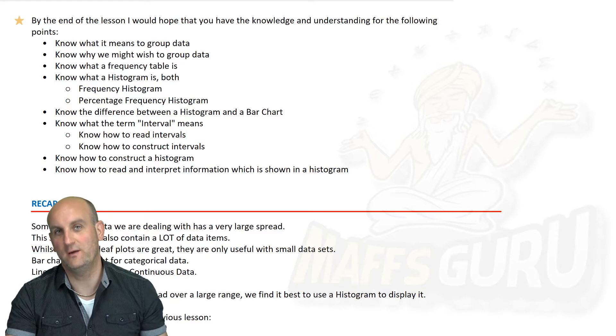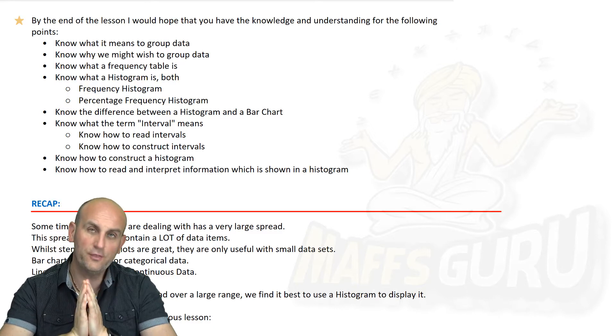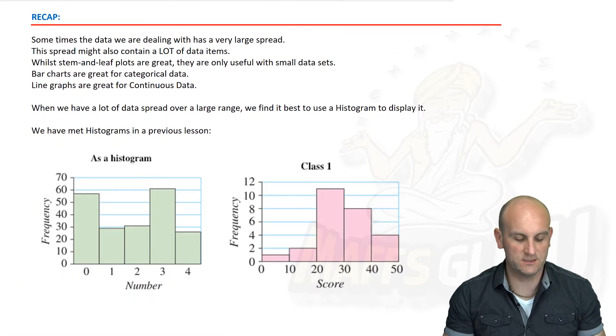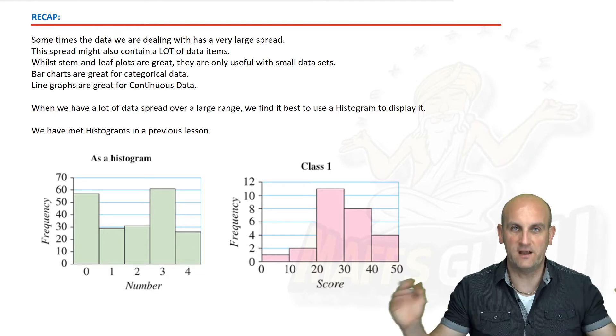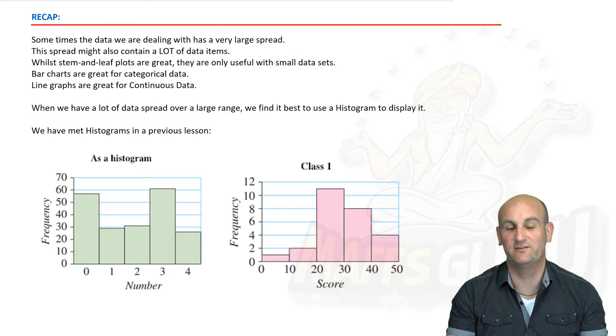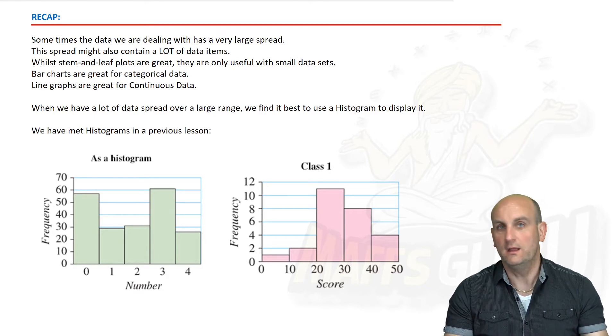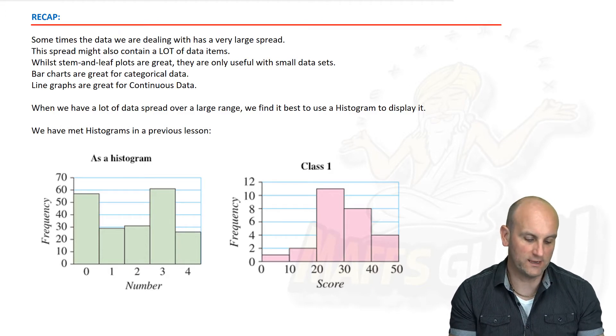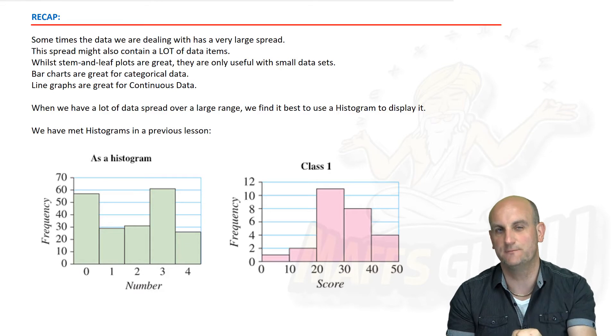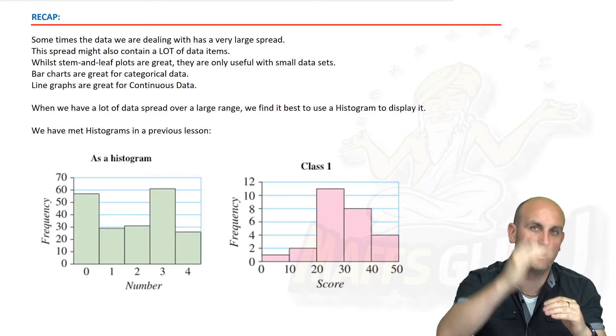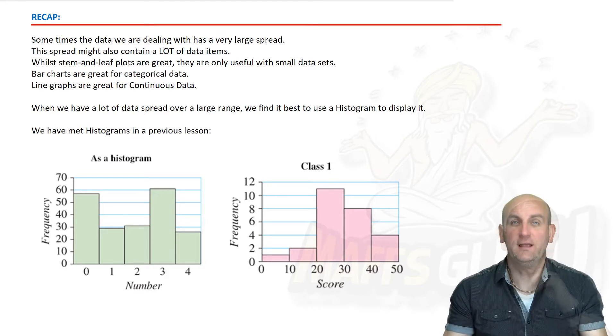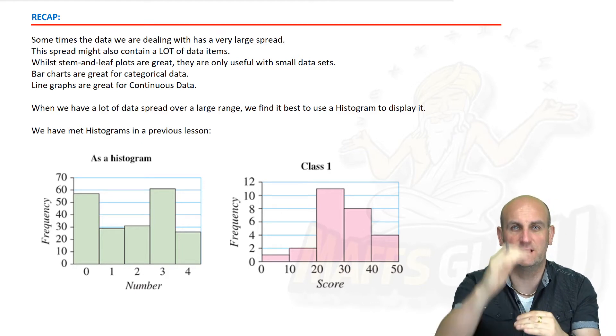Now a lot of this has already been covered in a previous video at a year eight level. So some of this is very much a recap. The great thing about Maths is sometimes we hit things over and over again to actually help you get better and better and better. Sometimes the data we're dealing with has a very large spread or in fact there's lots and lots of data. Trying to do a dot plot or a stem and leaf diagram with lots and lots of data actually is really hard and it takes a long, long time. So when we have lots and lots of data items, we try and group them together.